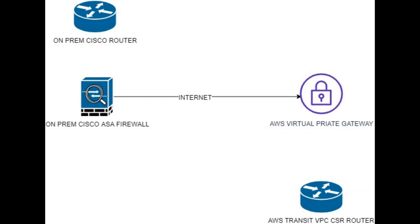The image shows a basic diagram of how the on-prem infrastructure connects to AWS infrastructure. Traffic from on-prem is routed by the Cisco router, goes via the Cisco ASA firewall through an IPsec tunnel to the AWS Virtual Private Gateway, then reaches the AWS Transit VPC CSR router. We have a single point of failure in the internet circuit — if there are any issues, we immediately lose connectivity from on-prem to the AWS Transit infrastructure.